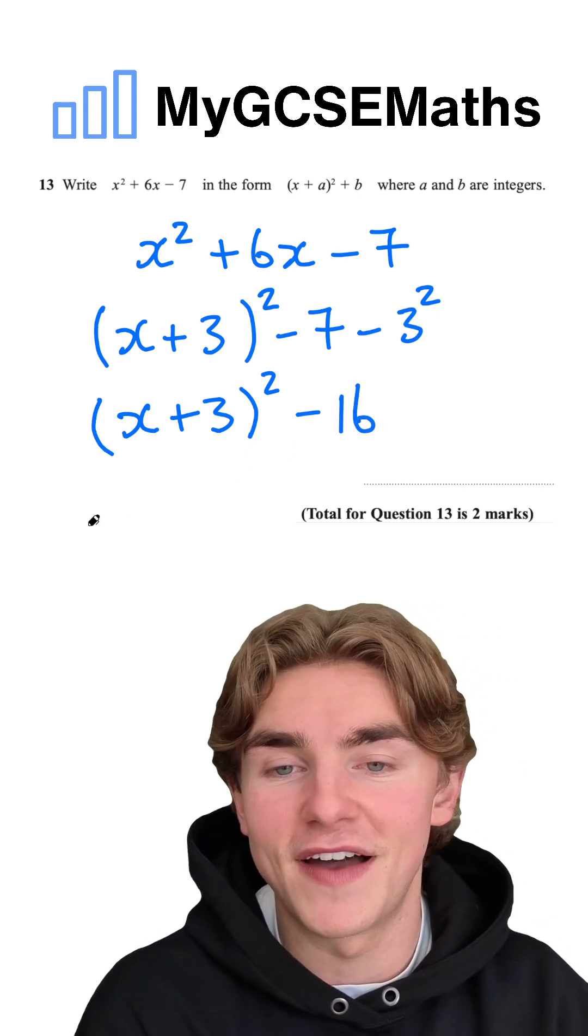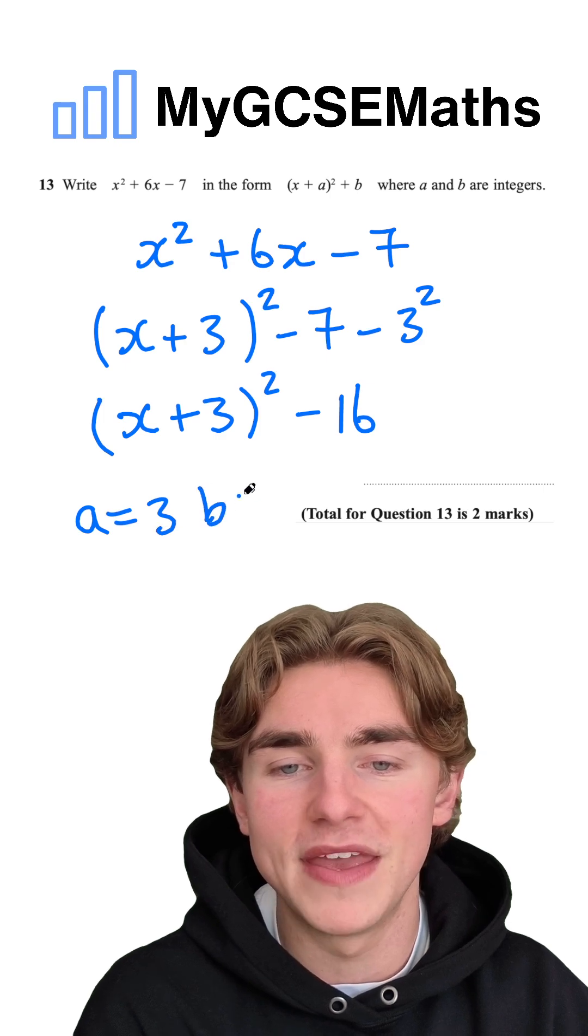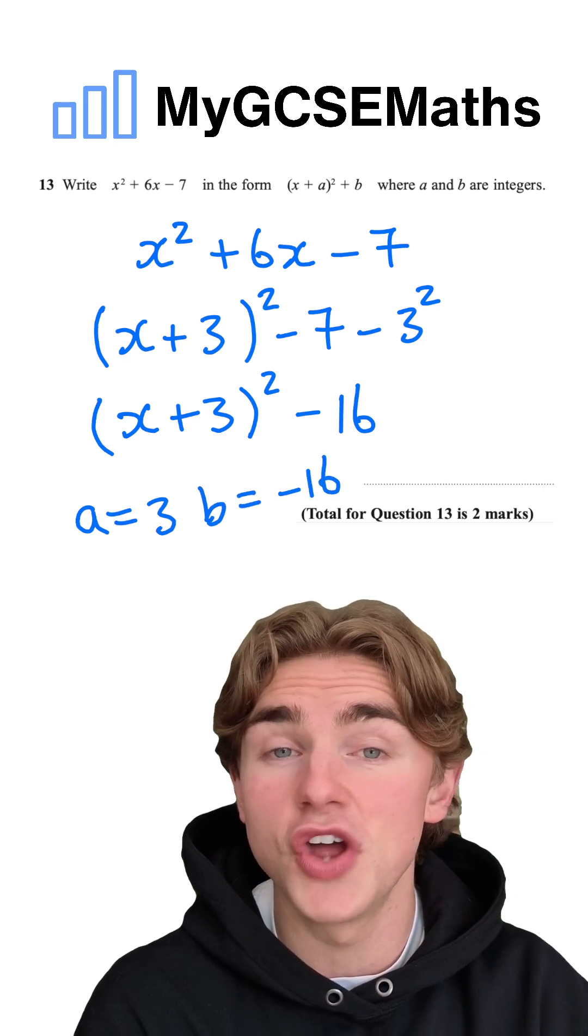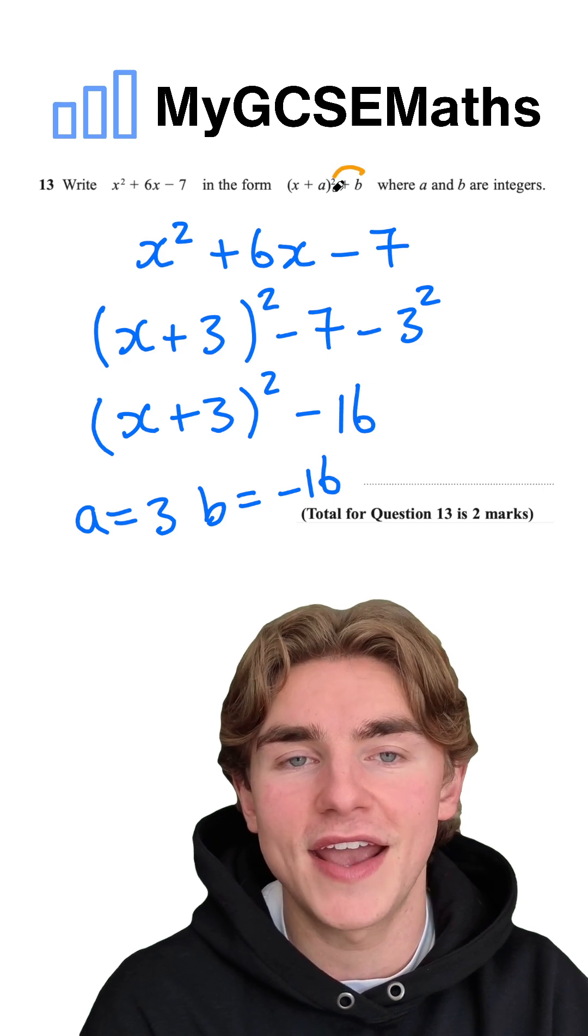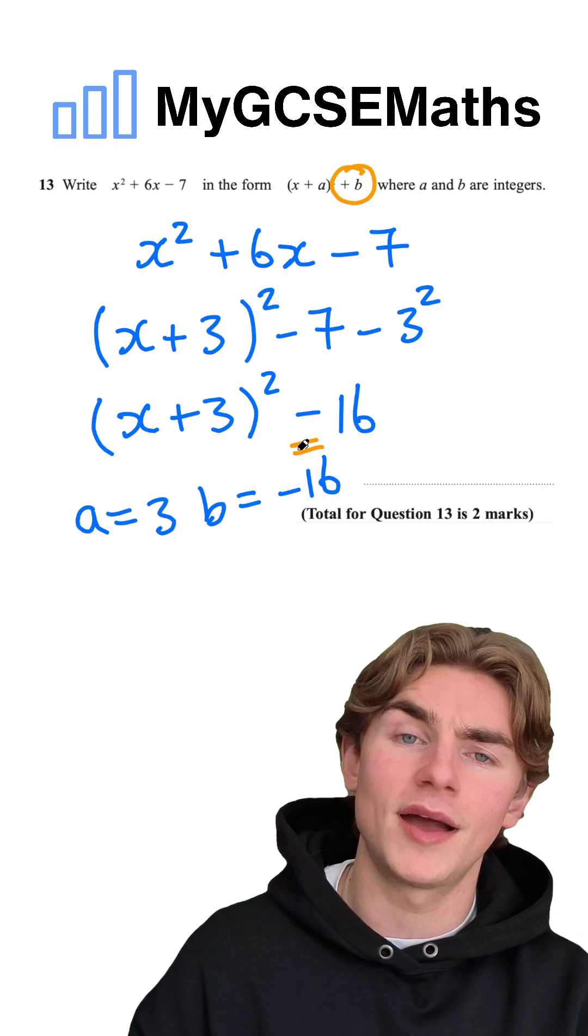So we can say here that the value of a is equal to 3 and the value of b is equal to negative 16. Don't worry about the fact that you've got a negative number there, even though it says plus. They do this sometimes.